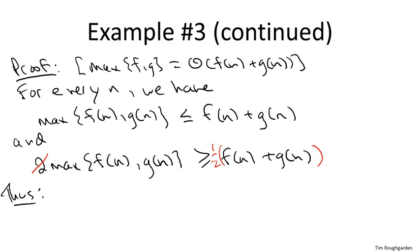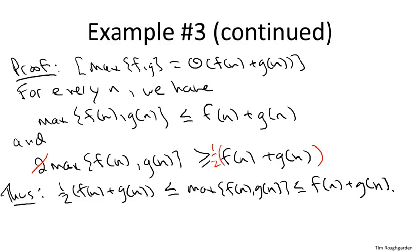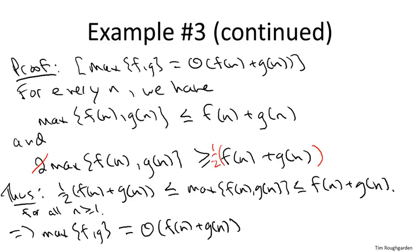And now we're pretty much home free. What does this say? This says that for every possible n, the maximum is wedged between suitable multiples of the sum. So one half times f(n) plus g(n) is a lower bound on the maximum. This is just the second inequality that we derived. And by the first inequality that's bounded above by once times the sum. And this holds no matter what n is. Any n at least 1. And this is exactly what it means to prove that one function is theta of another. We've shown that for all n, not just for n sufficiently large, but in fact for all n, the pointwise maximum of f and g is wedged between suitable constant multiples of their sum. And again, just to be explicit, the certifying choices of the constant are n_0 equals 1, the smaller constant is 1/2, and the bigger constant equals 1. And that completes the proof.